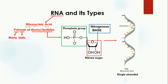Here in this diagram you can see that these colored lines are actually ribonucleotides, and there are so many ribonucleotides combined together to form one molecule of RNA. This is why RNA is known as the polymer of ribonucleotides. RNA is actually a single-stranded molecule, in comparison to DNA which is a double-stranded molecule.